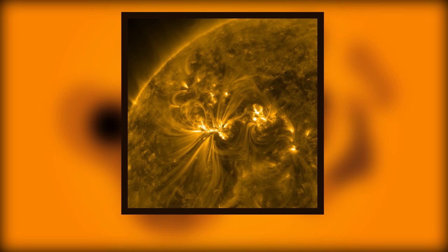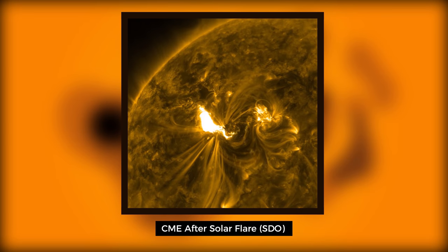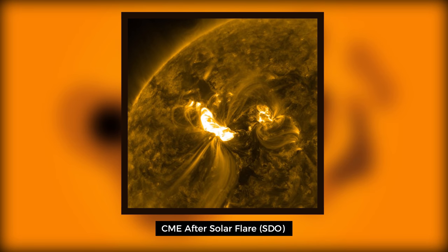On occasion, solar flares produce coronal mass ejections, or CMEs. CMEs contain millions of tons of plasma traveling at high speeds, reaching Earth in as little as 18 hours.